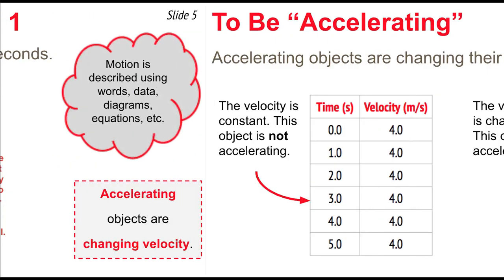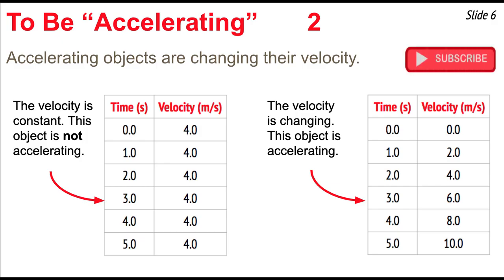Now let's look at some velocity-time data for accelerating objects. We see two sample data tables. The table on the left shows an object keeping the same velocity — it's not accelerating, it has a constant velocity. The table on the right shows a changing velocity: each second, the velocity changes from the second before by an amount of 2 meters per second. That's an accelerating object.